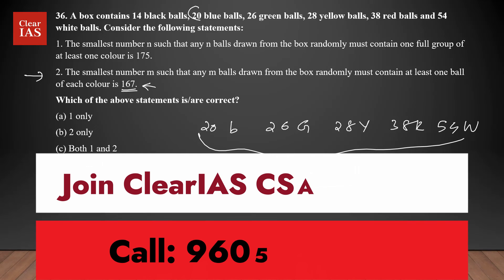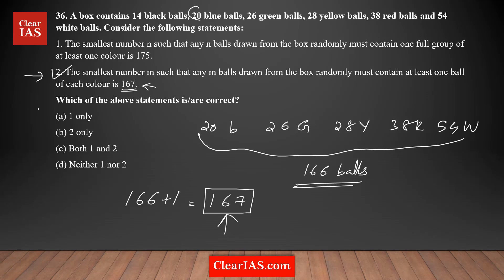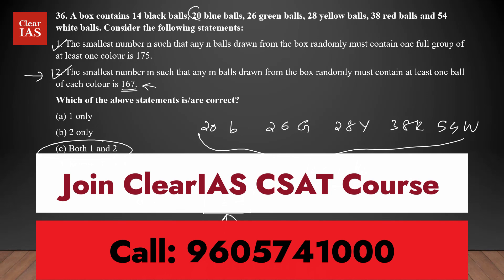After 166 balls, the condition is not satisfied because there are no black balls, and statement 2 requires at least one ball of each color. The next ball you select must be a black ball since all other colors are exhausted, so at 166 + 1 = 167 balls you will definitely have at least one ball of each color. The minimum number is 167, so statement 2 is also correct. Both statements are right, and the answer is option C.